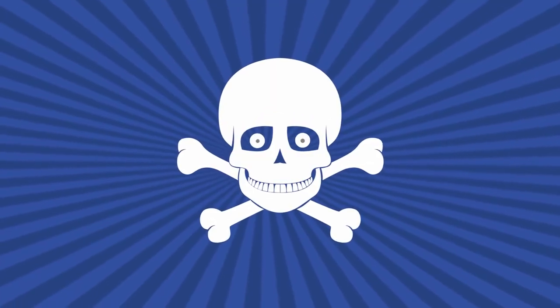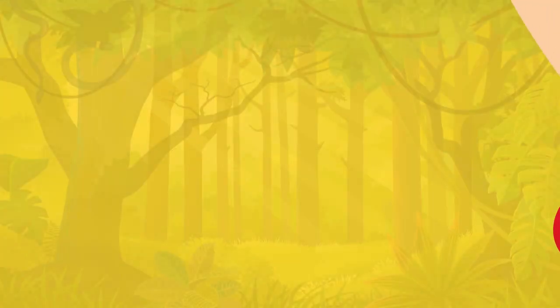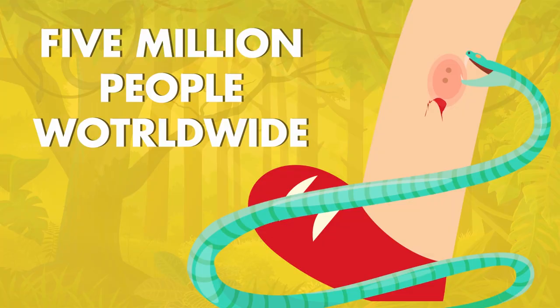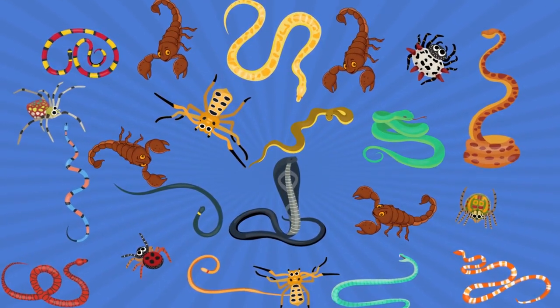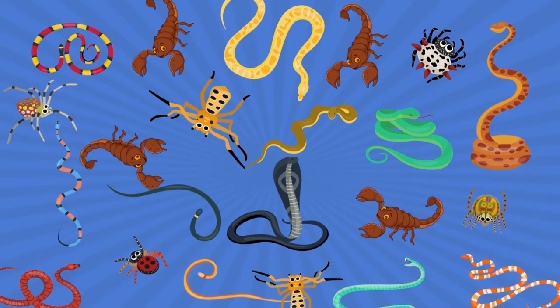But what type of threat do these animals actually pose to us? Amongst snakes alone, each year up to 5 million people worldwide are estimated to be bitten by these slithering creatures. But turns out that not all poisonous and venomous bites are created equal.